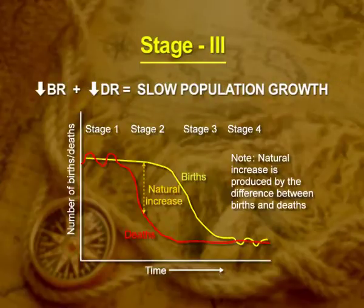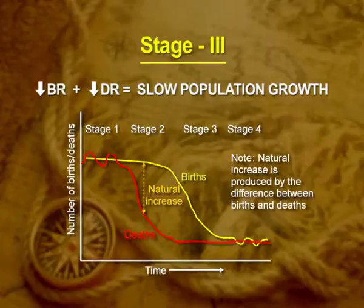Stage 3: In the third stage of demographic transition, both birth rate and death rate declined. Family planning, increased literacy rate, industrialization, and increased per capita income were the reasons for this stage. All through the world, we witness a difference in development and so a difference in the stages of demographic transition. The shift from rural and agrarian society to the urban world is an indicator of population growth.